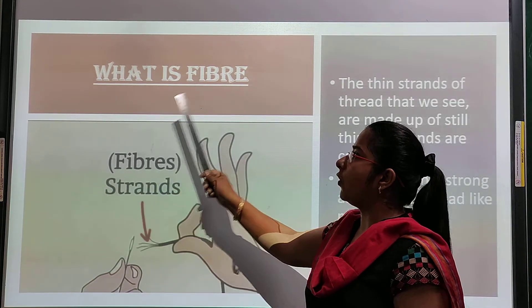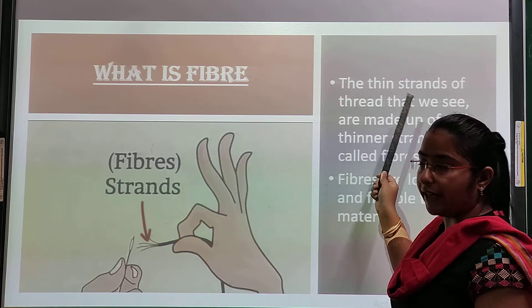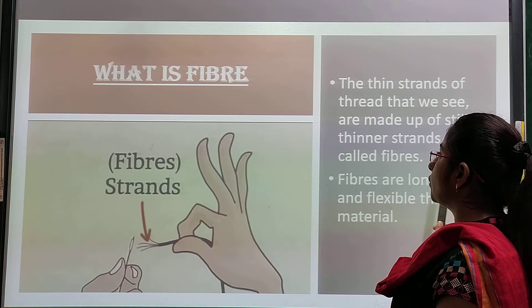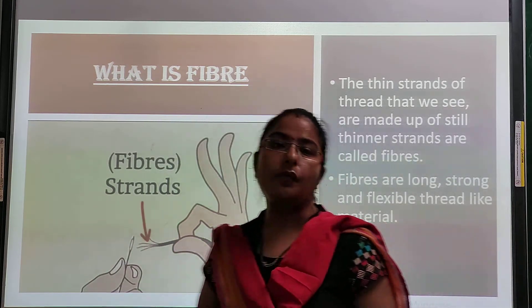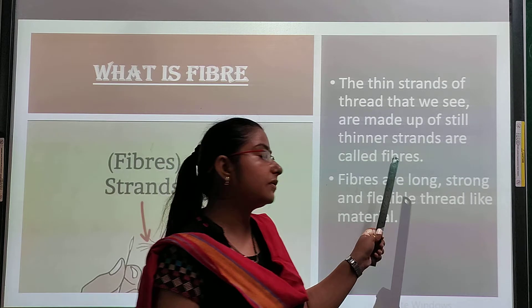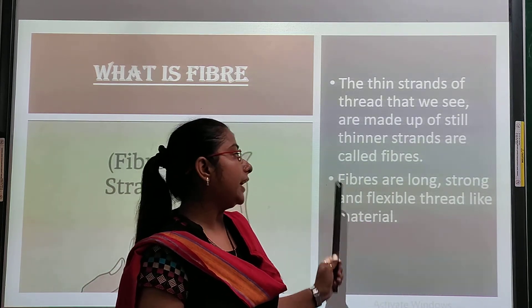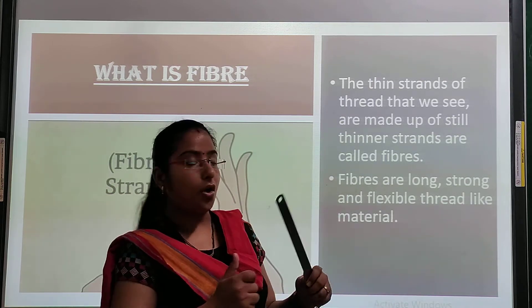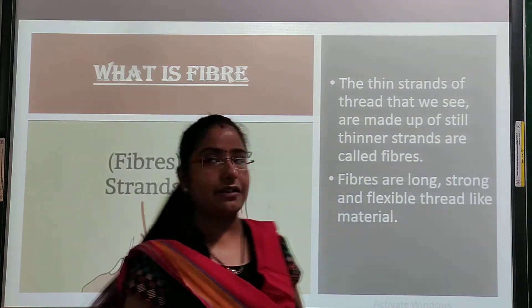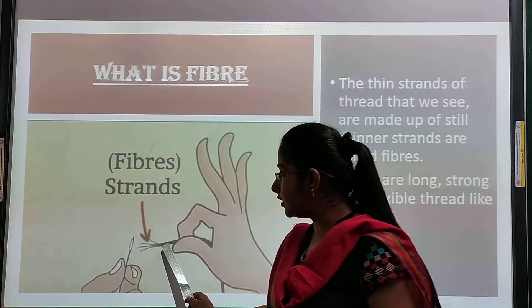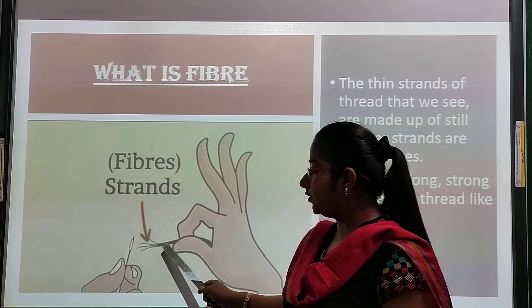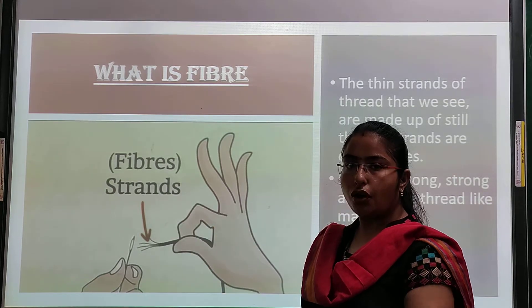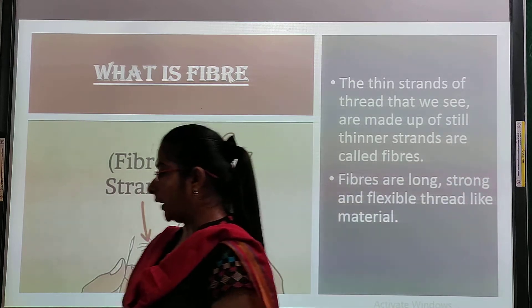So let's see what is fiber. The thin threads from which yarn is made are called fibers. Fibers are long, strong, and flexible threads. Here you can see the picture — this is the yarn, and these thin threads that make up the yarn are known as fibers.